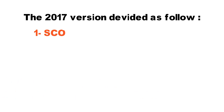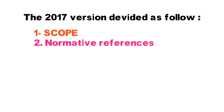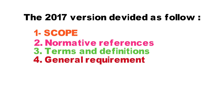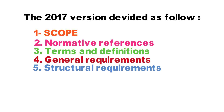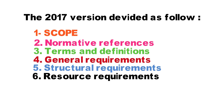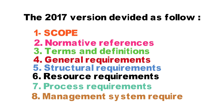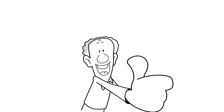One: Scope. Two: Normative references. Three: Terms and definitions. Four: General requirements. Five: Structure requirements. Six: Resources requirements. Seven: Process requirements. And eight: Management system requirements.